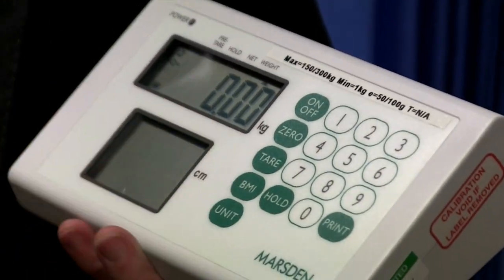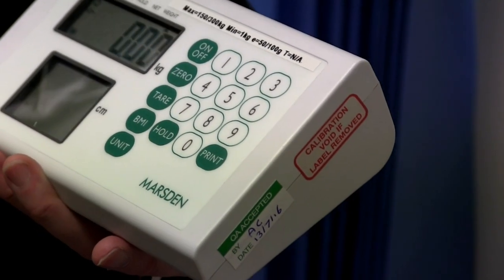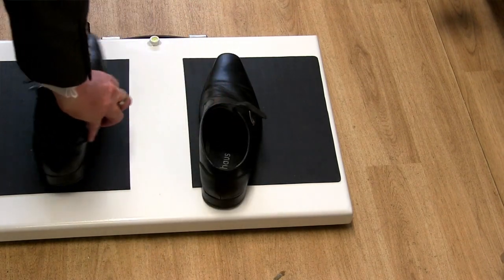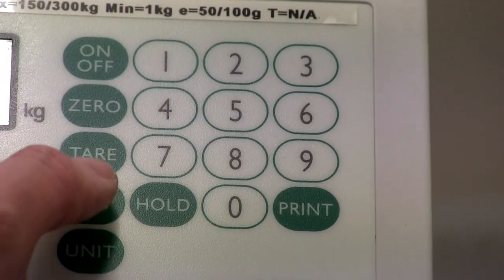The tear feature allows you to deduct any unwanted weight from the total, such as a pair of shoes. To use this function, simply add the weight you wish to deduct from the reading and press tear. When the patient is weighed, this figure will be removed from the weight reading.